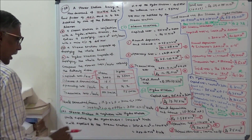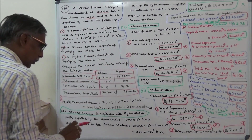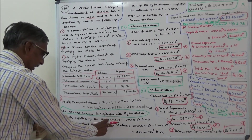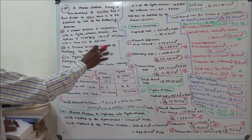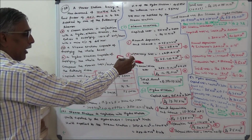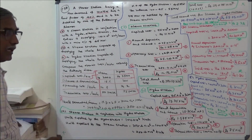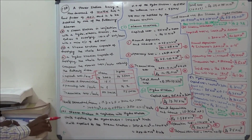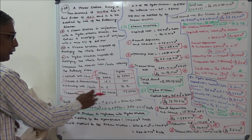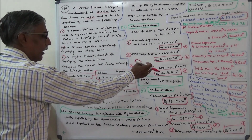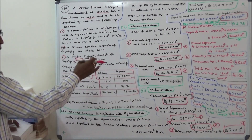Operating cost is rupees 1 per kilowatt hour. Units supplied by the steam station is 250.4 into 10 power 6, so operating cost is 1 into 250.4 into 10 power 6 equals rupees 25.004 crores. Transmission cost is 50 paise per kilowatt hour, so 250.4 into 10 power 6 into 0.50 equals rupees 12.52 crores.